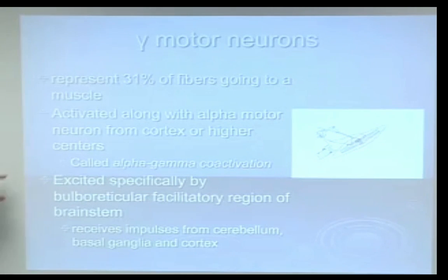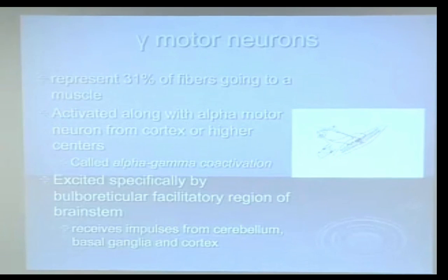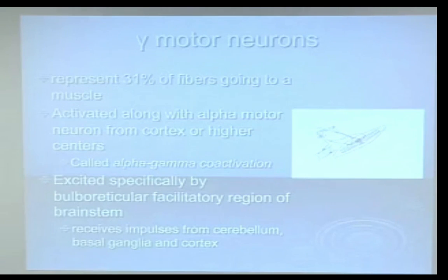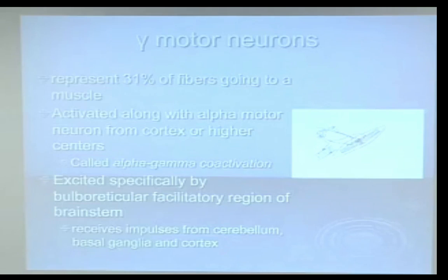Gamma motor neurons are activated along with alpha motor neurons. When I activate an alpha, I have to activate the gamma to change the muscle gain. As a muscle shortens, I need to make the spindle shorter so the muscle knows it can contract appropriately — otherwise it won't. We get spasm when there's a disparity between alpha and gamma gain, when one is active and the other is turned up too high or too low.